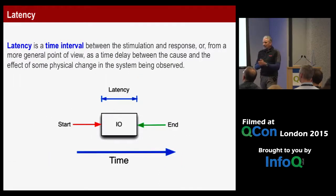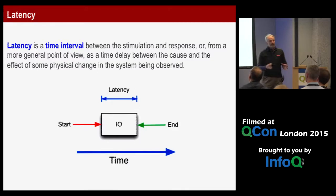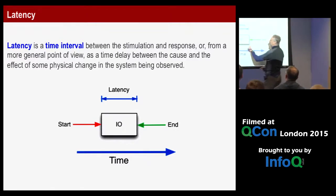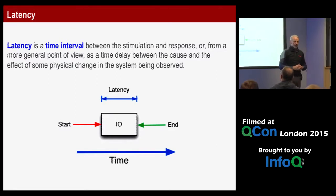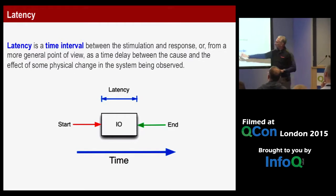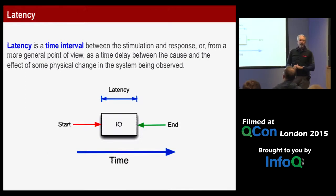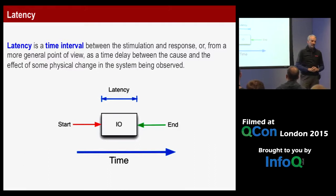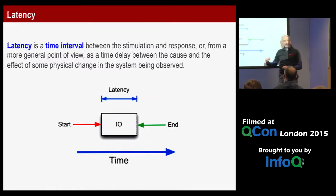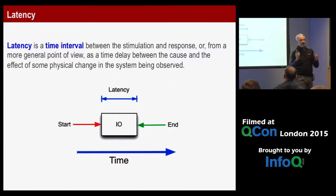Latency is the time it takes to go from start to end — whatever that thing is. In a network sense, it's from when you send a TCP/IP message on a socket until it's received at the other end, or from starting an IO to storage until it finishes. It's a measurement of time, and people want it to be small — low latency.